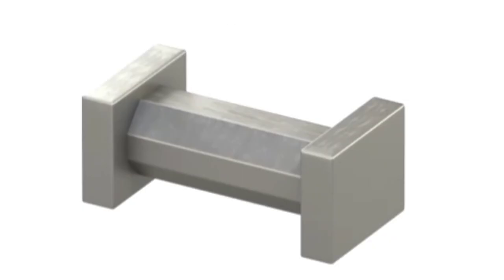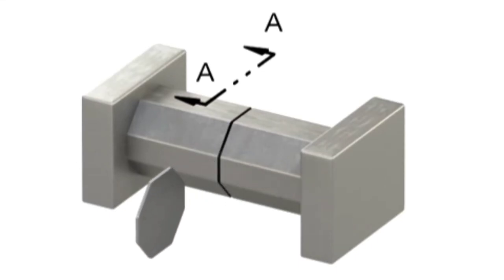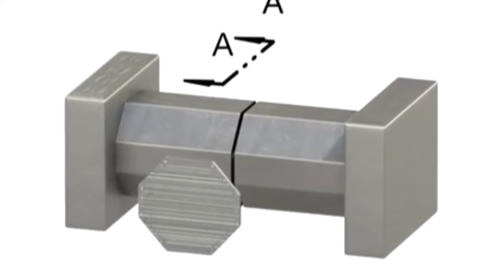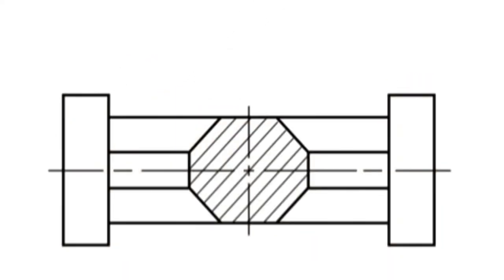A revolved section is created when the cutting plane slices through the feature, but the cut shape is rotated 90 degrees and shown directly on the regular view. Sometimes the new section is shown without brakes, and sometimes it is shown with brakes.